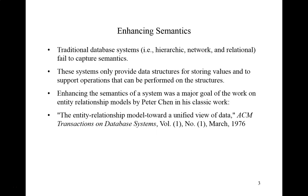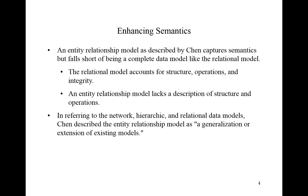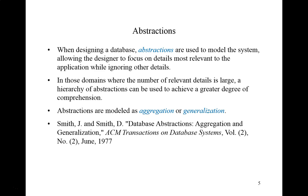Enhancing the semantics of a system was a major goal addressed by the work of Peter Chen in the 1970s, when he developed the entity-relationship model and presented his findings to the world. An entity-relationship model, as described by Chen, captures semantics but falls short of being a complete data model like the relational model. The relational model accounts for structure, operations, and integrity, whereas an entity-relationship model lacks a description of structure and operations. Chen described the entity-relationship model as a generalization or extension of existing models.